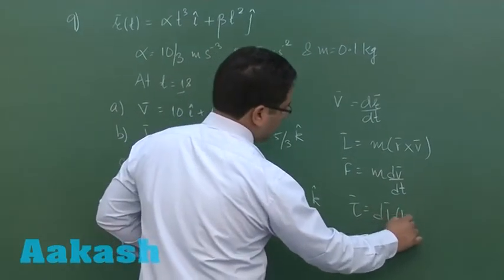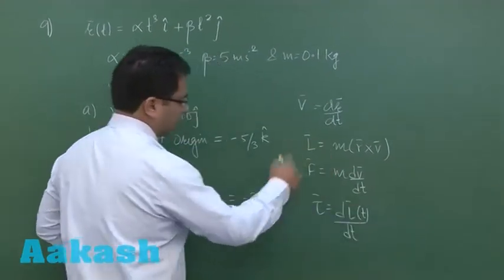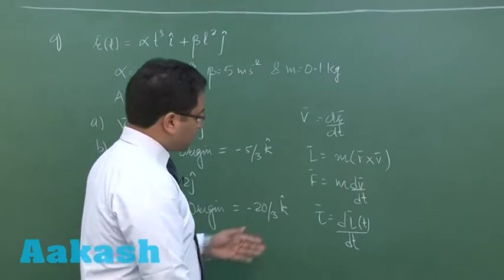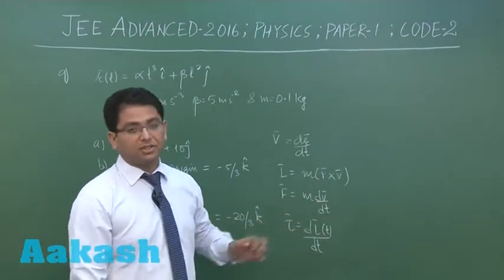What you could do is that you have calculated angular momentum as a function of time, you just differentiate with respect to time you will get torque, or another way is you do r cross f that is also equally valid.